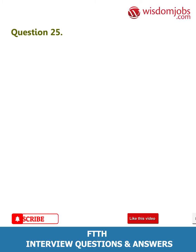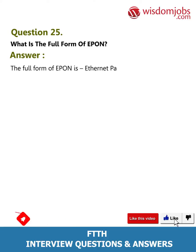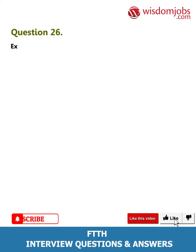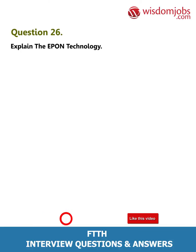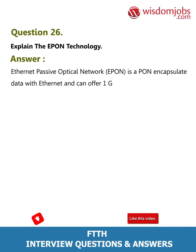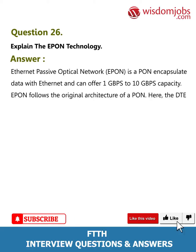Question 25: What is the full form of EPON? Answer: The full form of EPON is Ethernet Passive Optical Network. Question 26: Explain the EPON technology. Answer: Ethernet Passive Optical Network (EPON) is a PON that encapsulates data with Ethernet and can offer 1 Gbps to 10 Gbps capacity. EPON follows the original architecture of a PON, where the DTE is connected to the trunk of the tree and called as optical network unit at the premises of the subscriber.